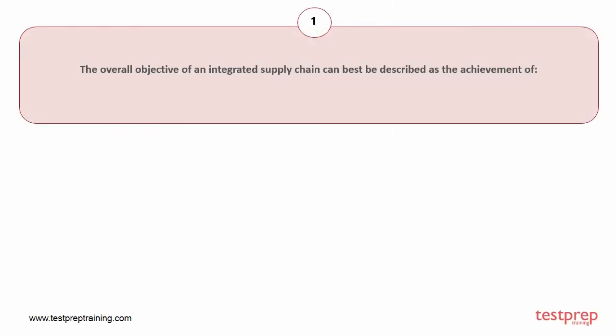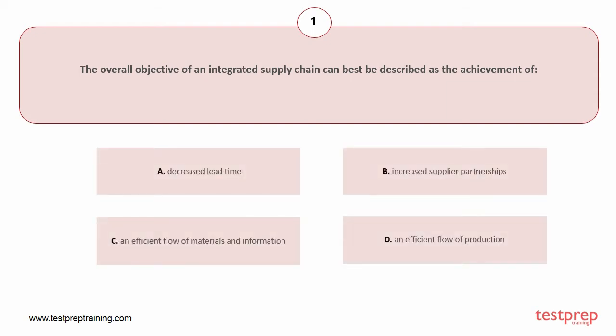Question number one: The overall objective of an integrated supply chain can best be described as the achievement of your options: A) decrease lead time, B) increase supplier partnerships, C) an efficient flow of materials and information, D) an efficient flow of production. The correct answer is option C.